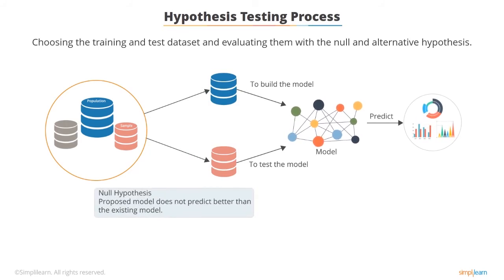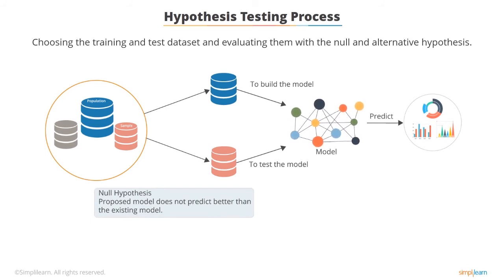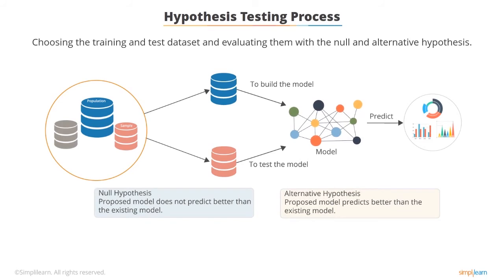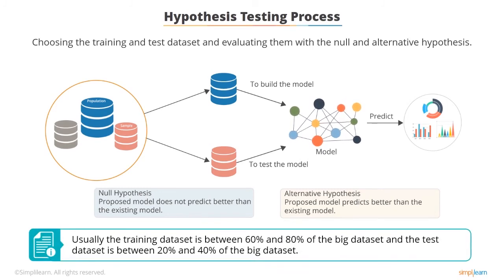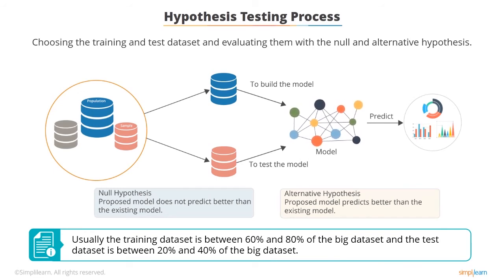The null hypothesis will be proven right when the proposed model does not predict better than the existing model. The alternative hypothesis will be proven right if the proposed model predicts better than the existing model. Typically the training data set size is anywhere between 60 and 80 percent of the big data set, and the test data set ranges between 20 and 40 percent of the big data set.